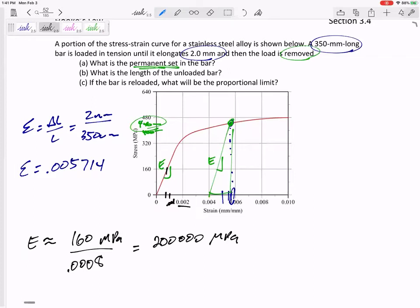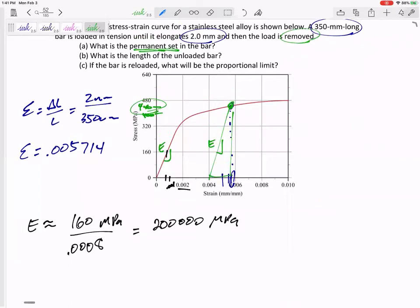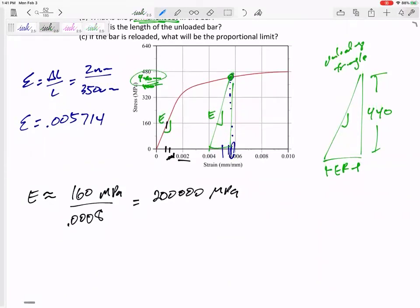So now I think I'm ready to unload. So here's the unloading triangle. I know this is at 440. The height is 440. And the elastic region, the elastic recovery - there's the base of my unloading triangle. I know that the E, the slope of the unloading triangle, would be the same as the slope of the elastic region.